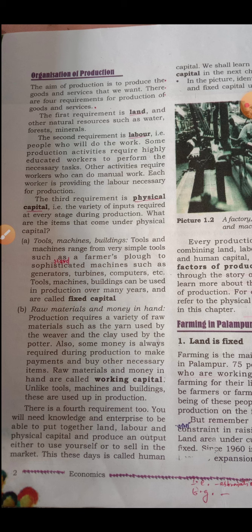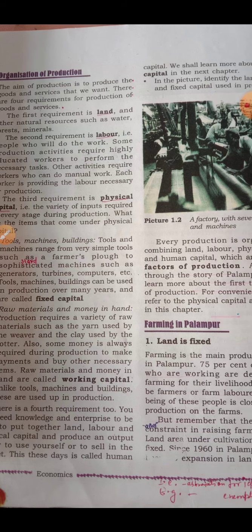The fourth requirement for production is human capital. You will need knowledge and enterprise to be able to put together land, labor, and physical capital and produce an output — either to use yourself or to sell in the market. This is called human capital.